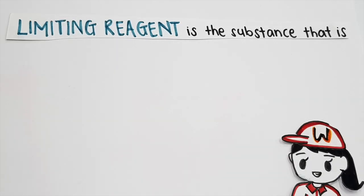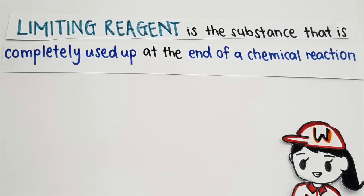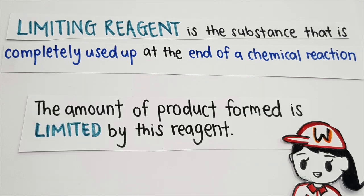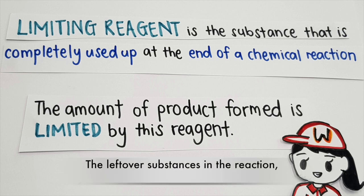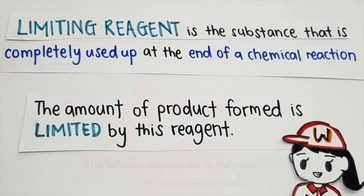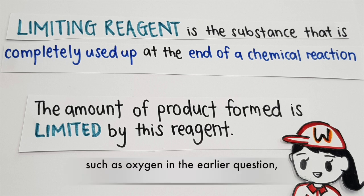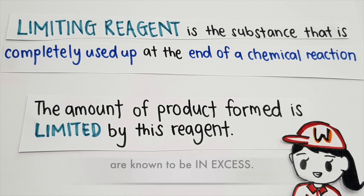Here we have the definition of limiting reagent. Limiting reagent is the substance that is completely used up at the end of a chemical reaction. The amount of product formed is limited by this reagent. The leftover substances in the reaction, such as oxygen in the earlier question, are known to be in excess.